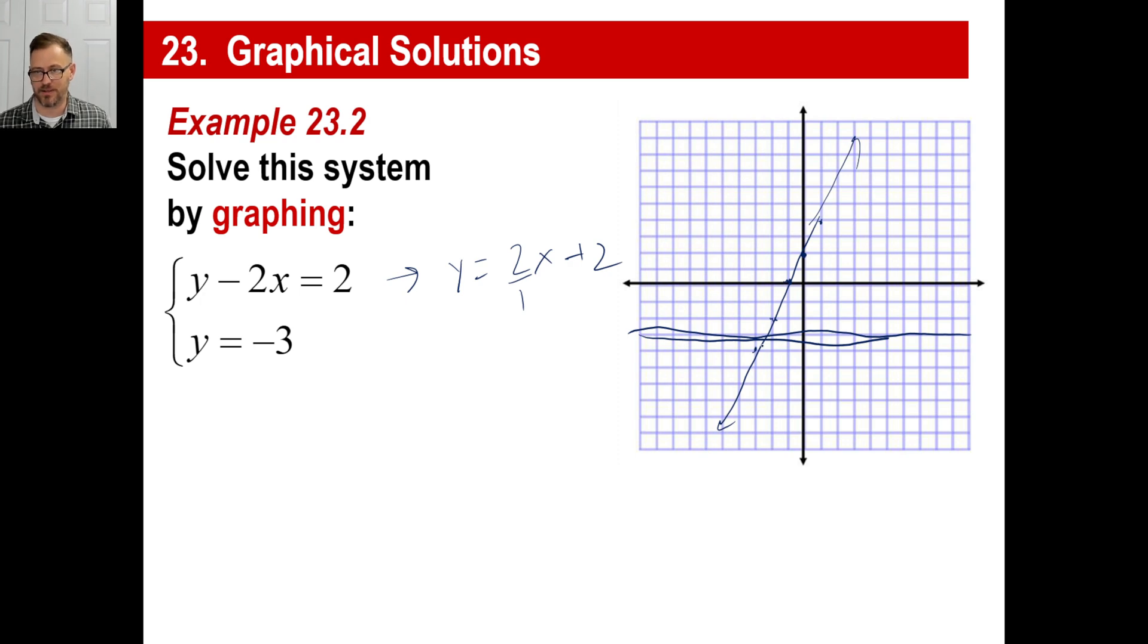Now you might look at this and go, it didn't quite add up exactly. But let's just try to figure it out. So if y is equal to negative 3, well, you know it's going to be negative 3 for the y value. So the x value, let's just put it in there. So y is negative 3. Negative 3 minus 2x equals 2. So negative 2x, I'm moving this over. That'll be 5. So 3 plus 2. And then x is going to be 5 over 2, but negative. And that's about right. So that's your solution.